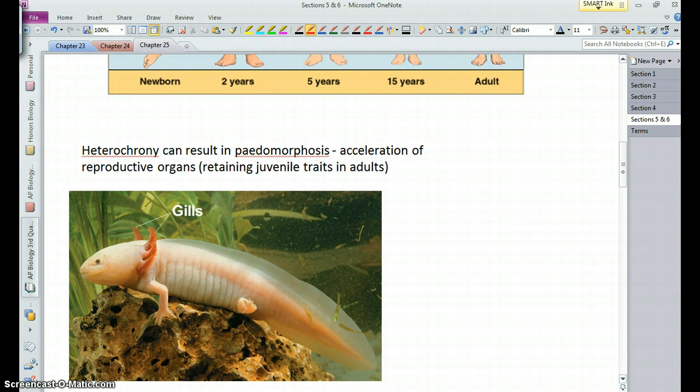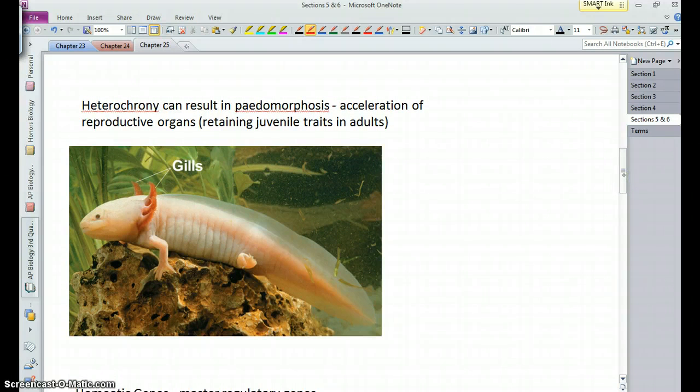Now, heterochrony can result in what we call pedamorphosis, and pedamorphosis is when reproductive organisms in one species proceeds faster than in a related species. So, for example, here, this is a type of salamander that becomes an adult, that is, its reproductive organisms develop at a faster rate, and so it becomes an adult at a stage which other salamanders are still in a juvenile stage. So, as an adult, it has these external gills, it lives in water, and this is essentially, its adult stage is where other salamanders are when they're juveniles, and so it exhibits what we call pedamorphosis. It's retaining juvenile characteristics like the gills and an aquatic existence in an adult.